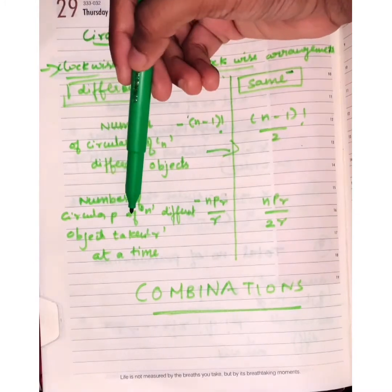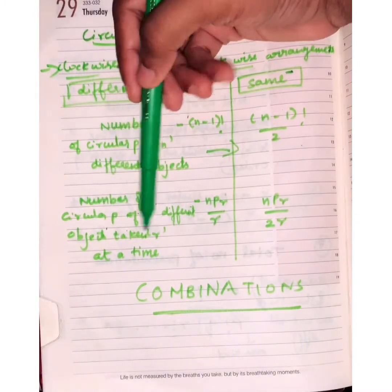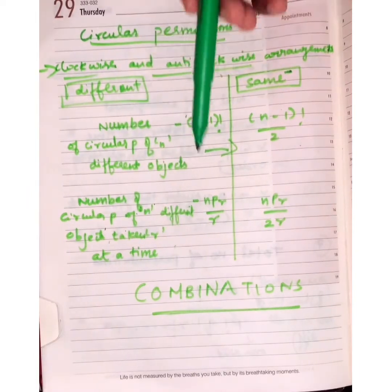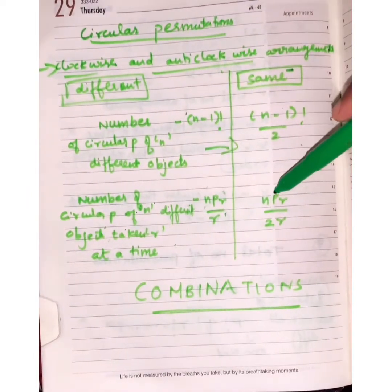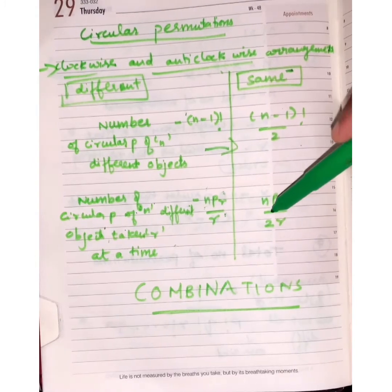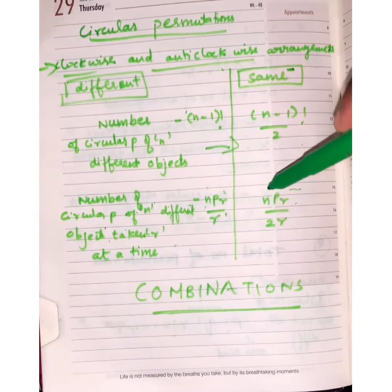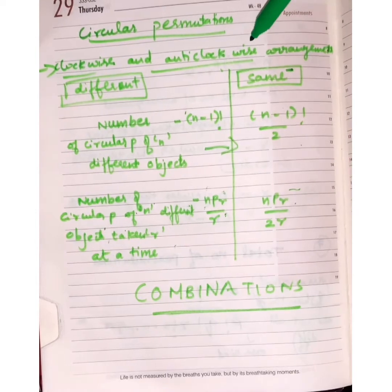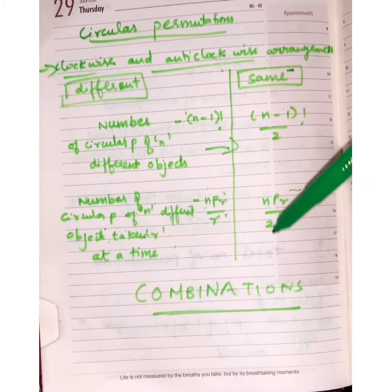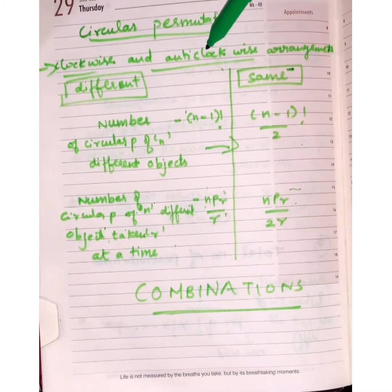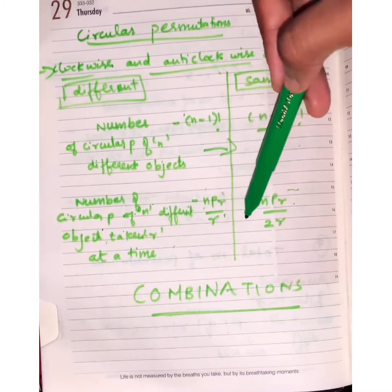For the number of circular permutations of n different objects taken r at a time: when clockwise and anti-clockwise are different, the formula is nPr / r. When they are the same, the formula is nPr / (2r).